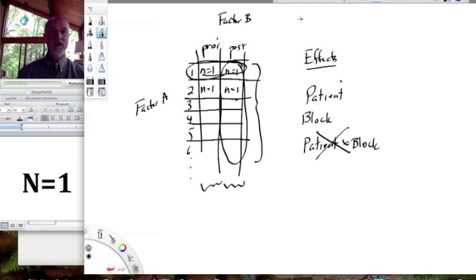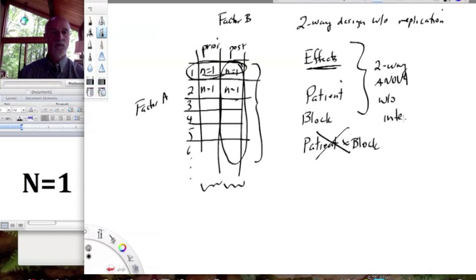So when we do a two-way design without replication, we simply analyze it as a two-way ANOVA without interaction. So we have these factors in it. So it's a two-way ANOVA without interaction. And one of the beauties of doing it this way is it's actually conceptually and mathematically equivalent. It gives us exactly the same p-value as our parent t-test.